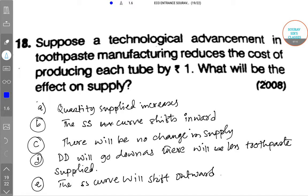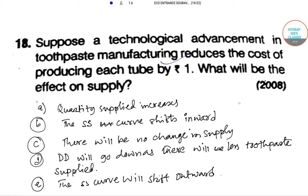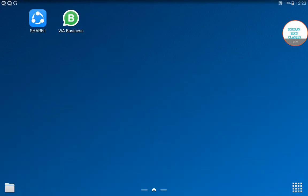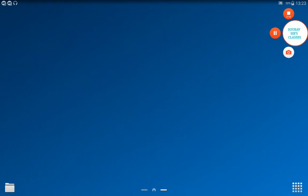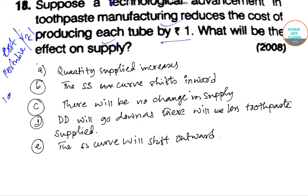Question 18: Suppose a technological advancement in toothpaste manufacturing reduces the cost of production per tube by one unit. The price of toothpaste is $1 per tube. What will be the effect on supply? Obviously, if our cost decreases, the manufacturer's profit will increase, so the supply curve will shift outward. Option E is the correct answer.